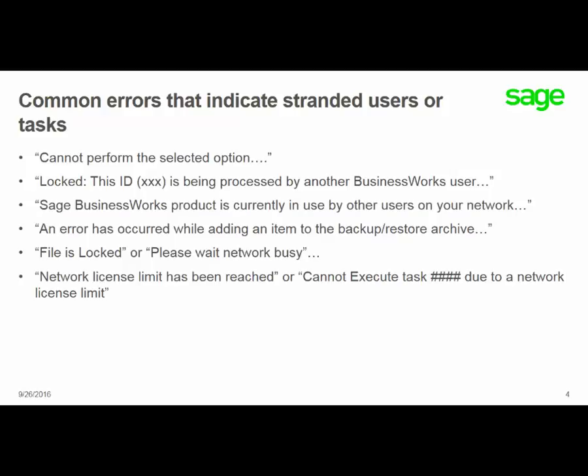This ID is being processed by another user when trying to access an entity record, such as a vendor, customer, part, job, or employee. You might get a message that the Sage BusinessWorks product is currently in use by other users on the network. Or you might get a message that the Sage BusinessWorks program is currently running and to close all tasks. Both of these appear when trying to install product updates or service packs if a user has been stranded in the product.